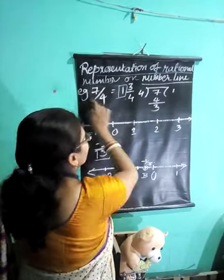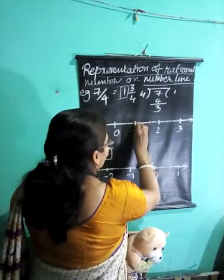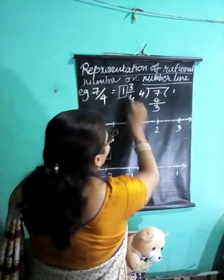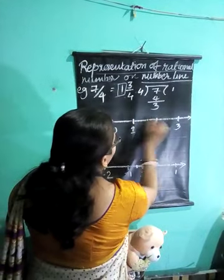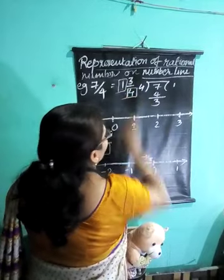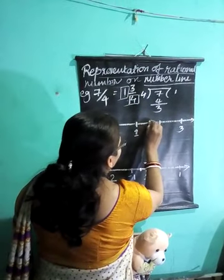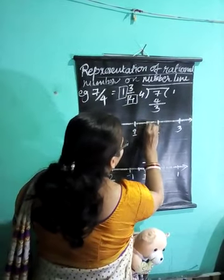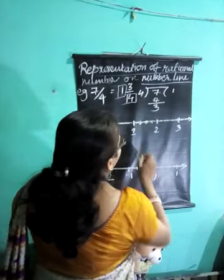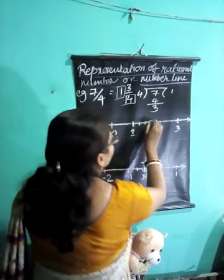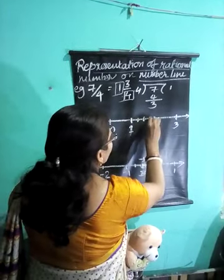Because it is an improper fraction, we work between 1 and 2. Now see the denominator — it is 4. Divide the space between 1 and 2 into 4 equal parts. Lines are 3, but parts are 4. Remember that.